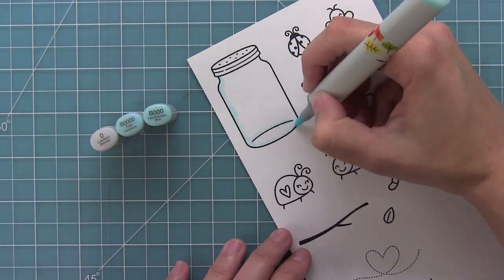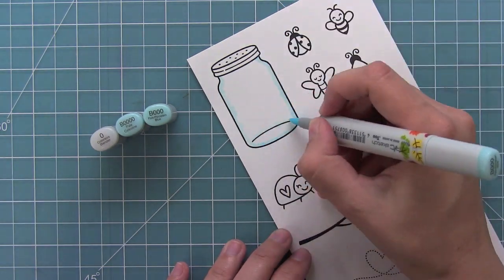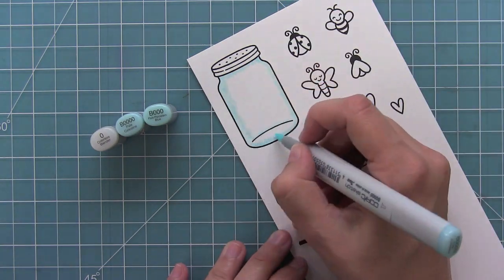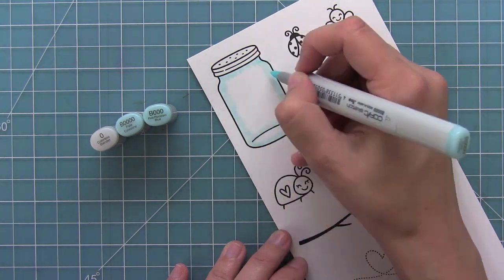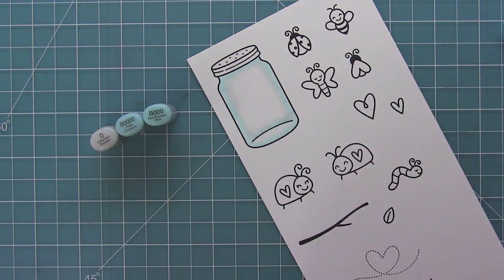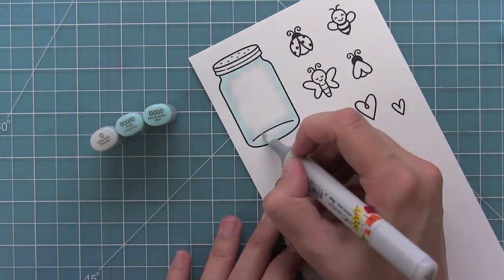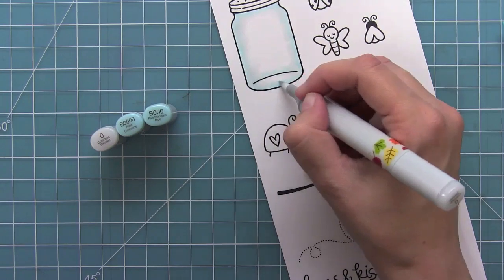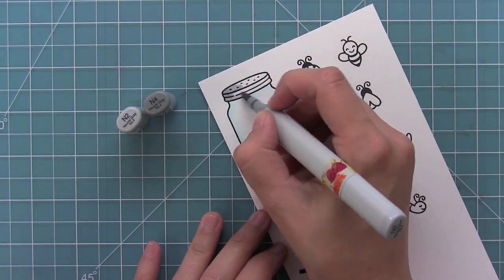Now I'm going to add some color using Copic markers to these images. And here I'm using some very light blues for the jar and what I'm going to do after I put all the blues down is take my colorless blender and go over all of that blue and really blend it out into the jar and kind of lighten up and blur out the edges too. I just love that look.